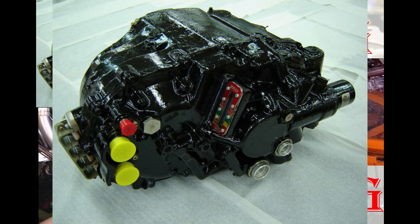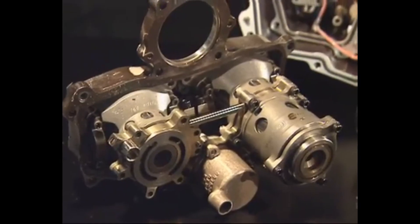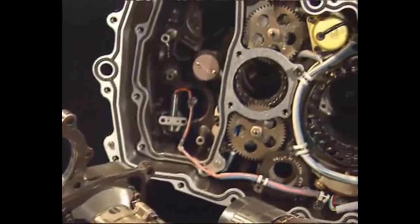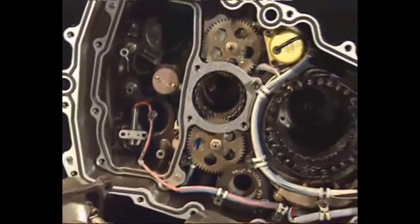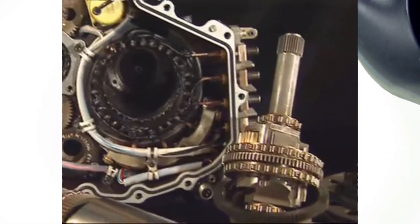The IDG provides electrical power for all the aircraft systems. Therefore, its reliability is of the utmost importance. It consists of a generator and a constant speed drive. The CSD converts the variable input of the engine into a fixed rotational speed for the generator, so the generator can provide a fixed frequency to the aircraft electrical network.